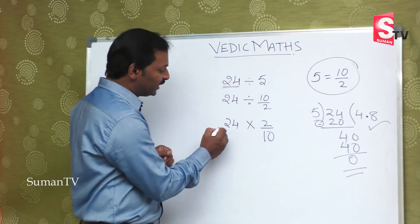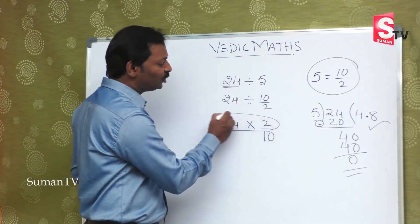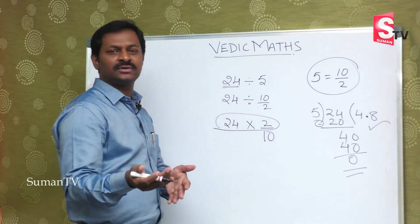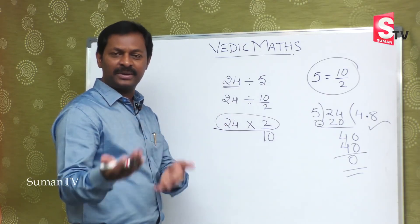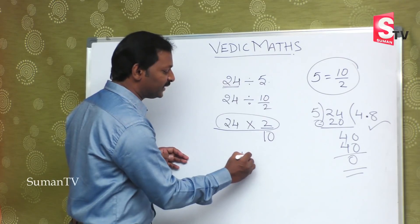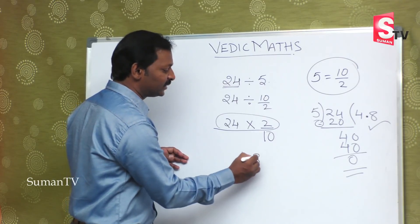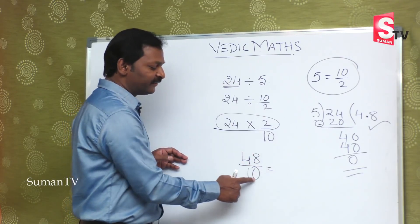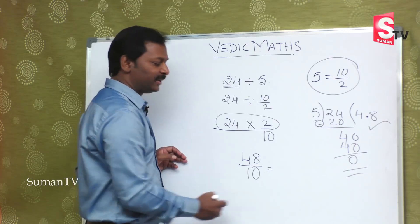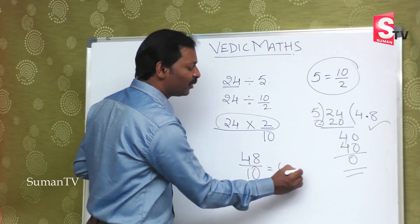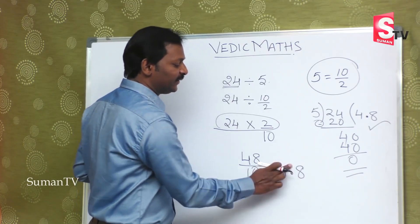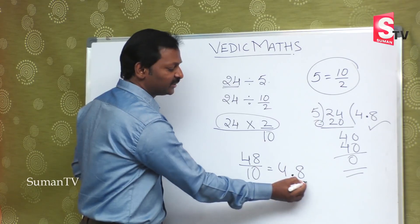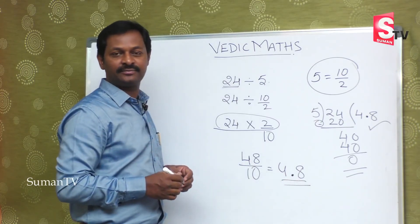So the number becomes twenty four into two. Twenty four two times — twenty four plus twenty four — that is nothing but forty eight by ten. By ten means one zero, so we put a dot one digit from the right. Forty eight becomes four point eight. So the answer is four point eight.